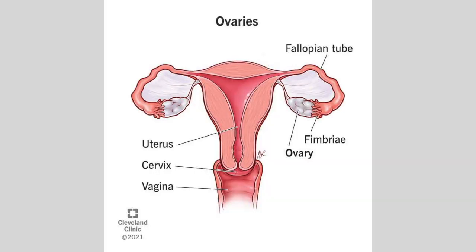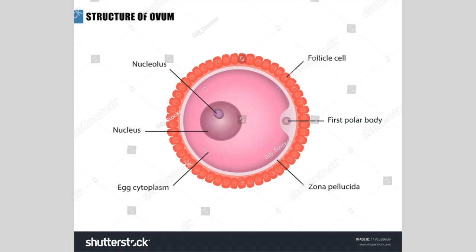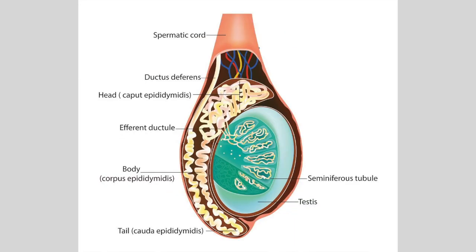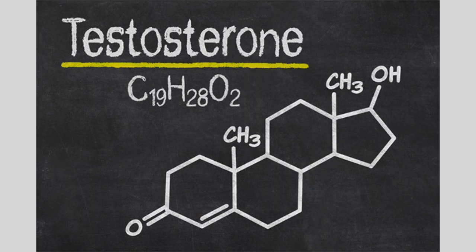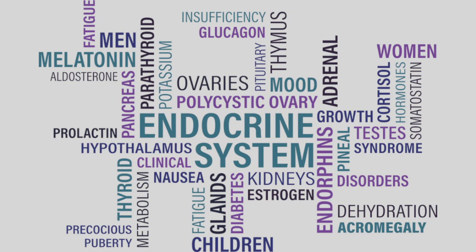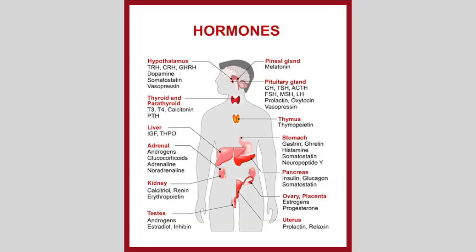For women, the ovaries are located below the opening of the fallopian tubes, and they contain eggs needed for sexual reproduction and produce estrogen. For men, the testes are located in a pouch and produce sperm and testosterone. Now I'm going to be moving on to disorders from the endocrine system. Like other systems in our body, the endocrine system can face problems which lead to disorders and diseases. Most of the disorders are hormonal based and occur due to problems in creating vital hormones and balancing hormone levels.